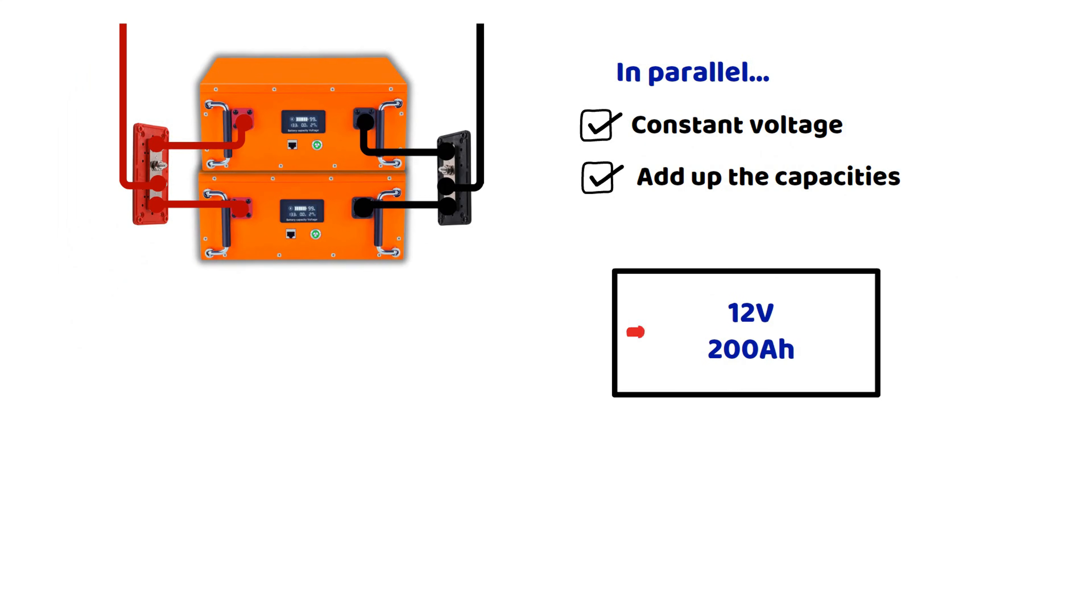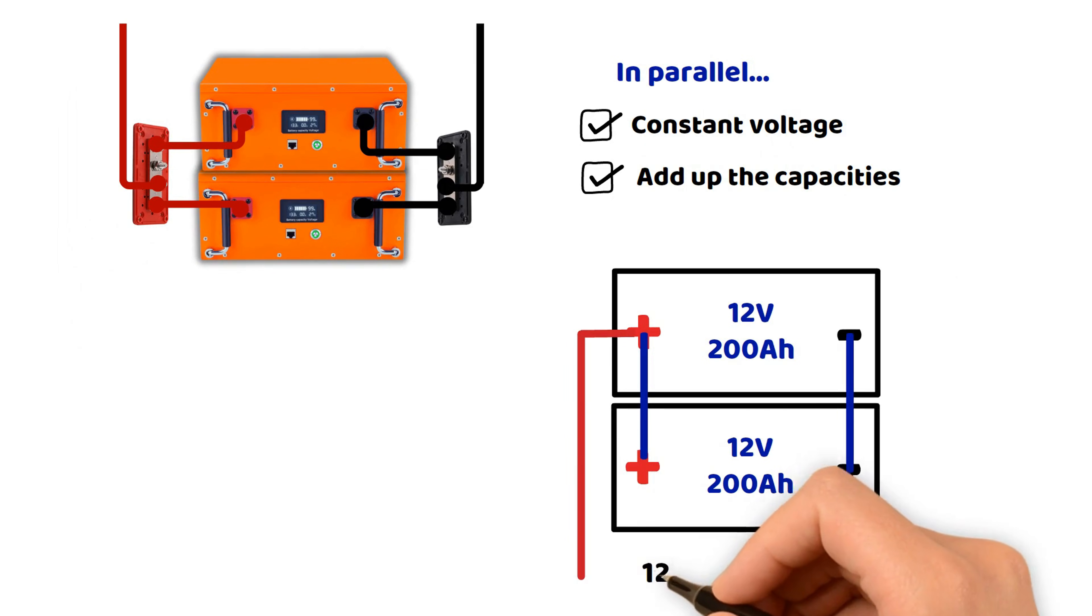This increases the system's autonomy, meaning the number of hours during which devices can be powered without sunlight. This type of setup is particularly useful if you want to stay at 12 volts but with enough capacity to power a strong inverter, for example.